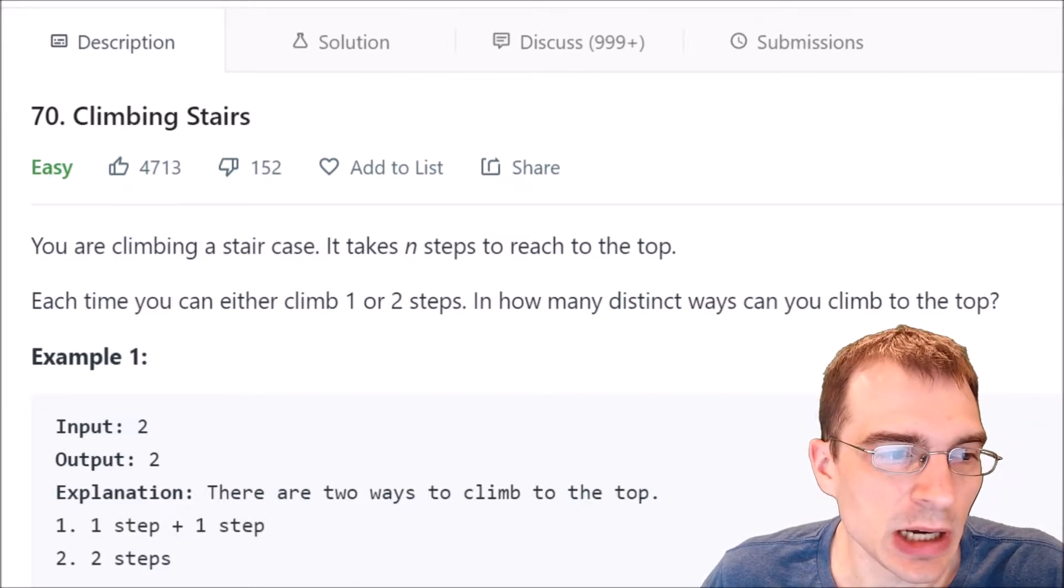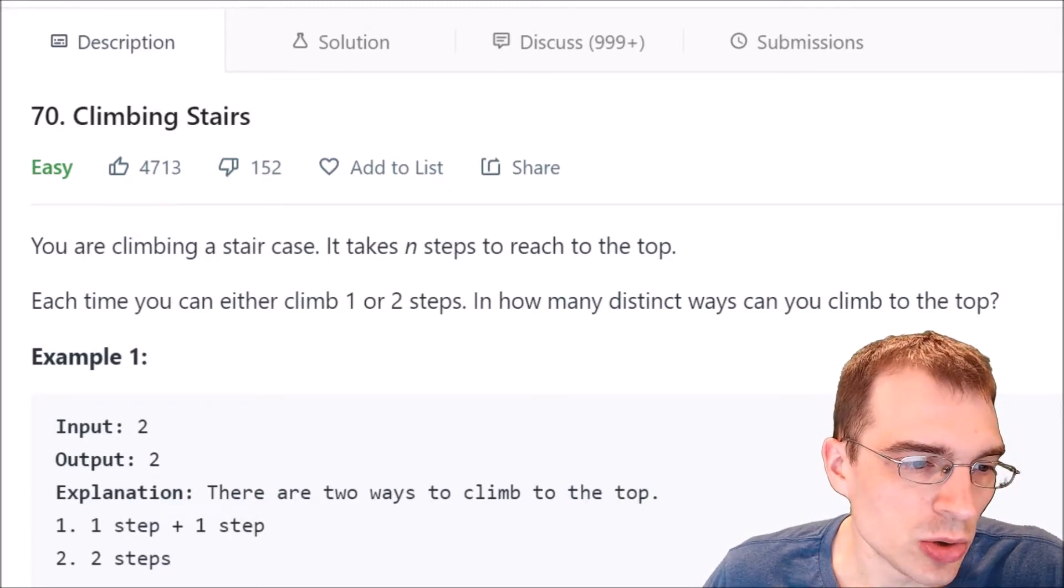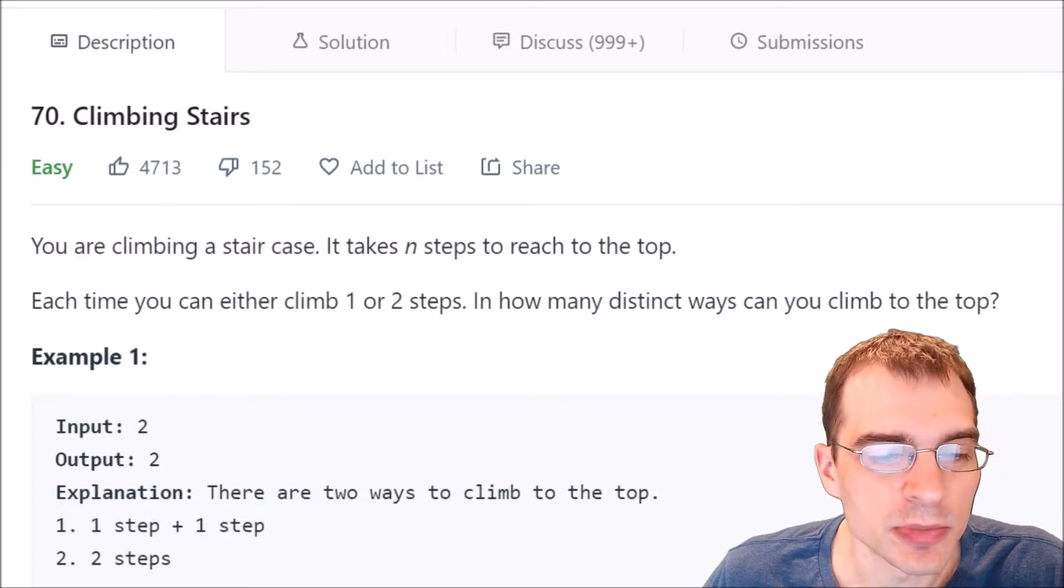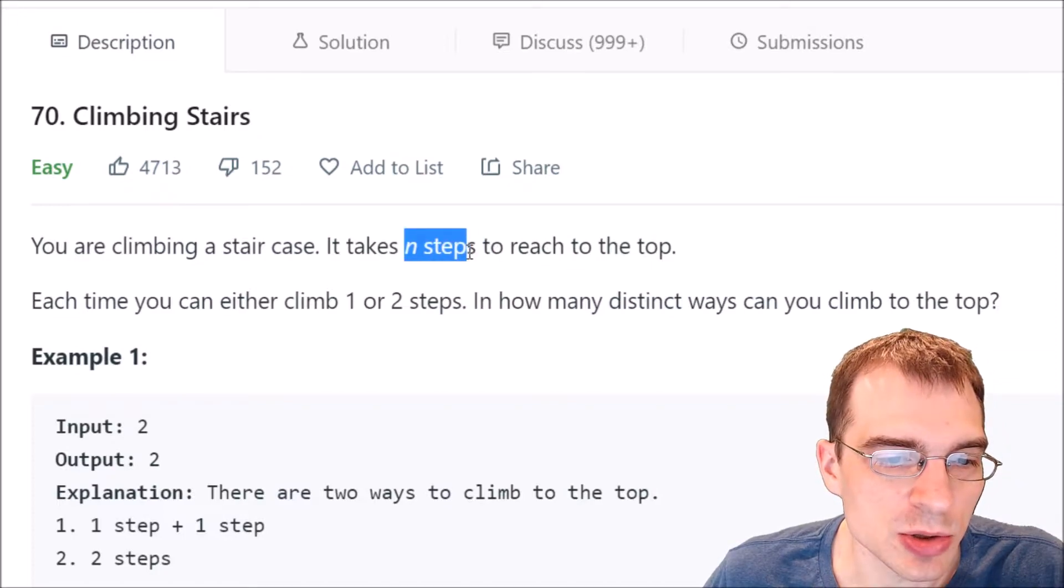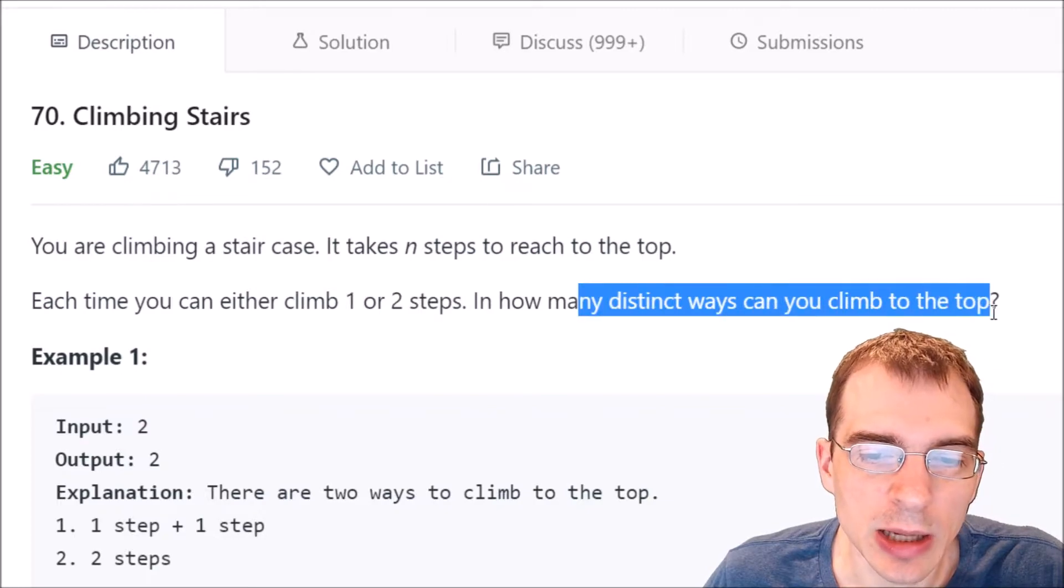This is classified as an easy problem. So we'll start by reading the problem setup here. You are climbing a staircase. It takes n steps to reach the top. Each time you can either climb one or two steps. In how many distinct ways can you climb to the top?